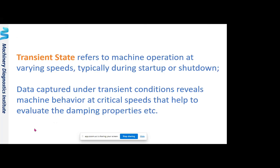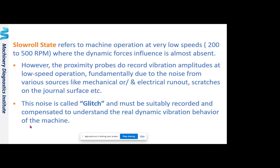Transient state data — captured during startup and shutdown — reveals machine behavior at critical speeds and helps evaluate damping properties. Slow roll data, captured at 200–500 RPM, still records vibration from proximity probes. This signal comes from various sources — mechanical or electrical — such as runouts, scratches, dents, or irregularities on the shaft surface. This is referred to as 'glitch,' which is signal noise that must be recorded and compensated to understand the true dynamic vibration behavior.